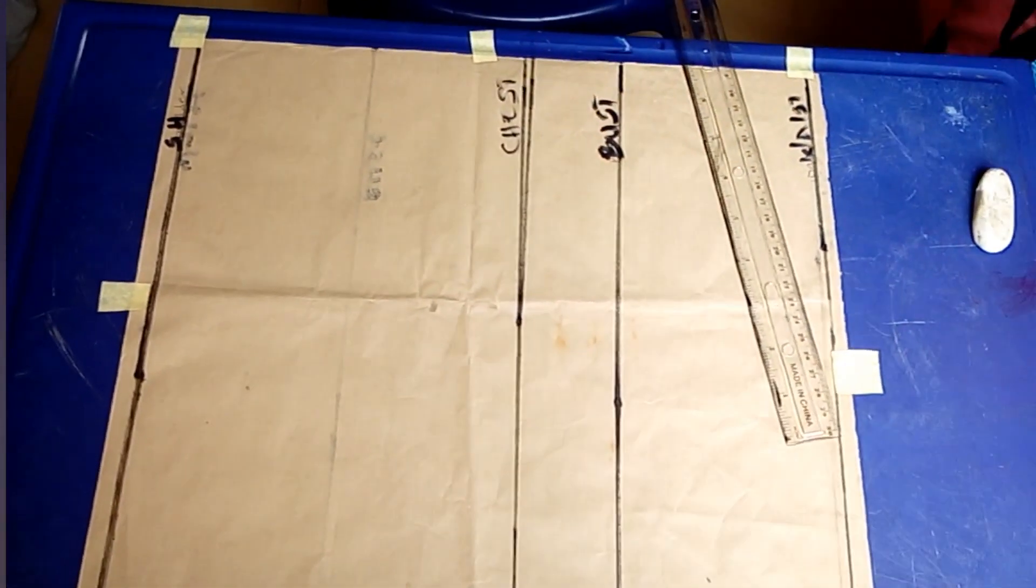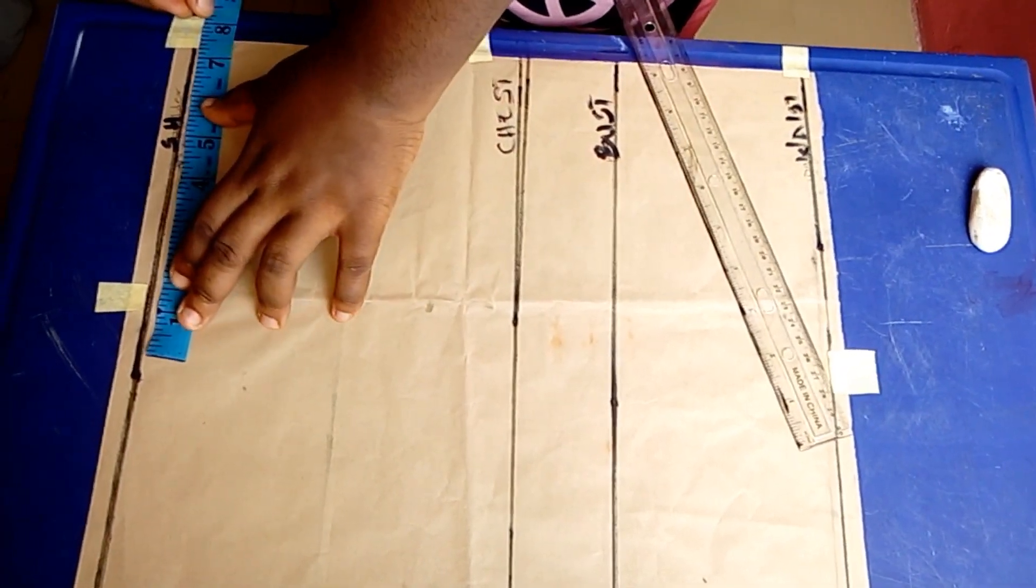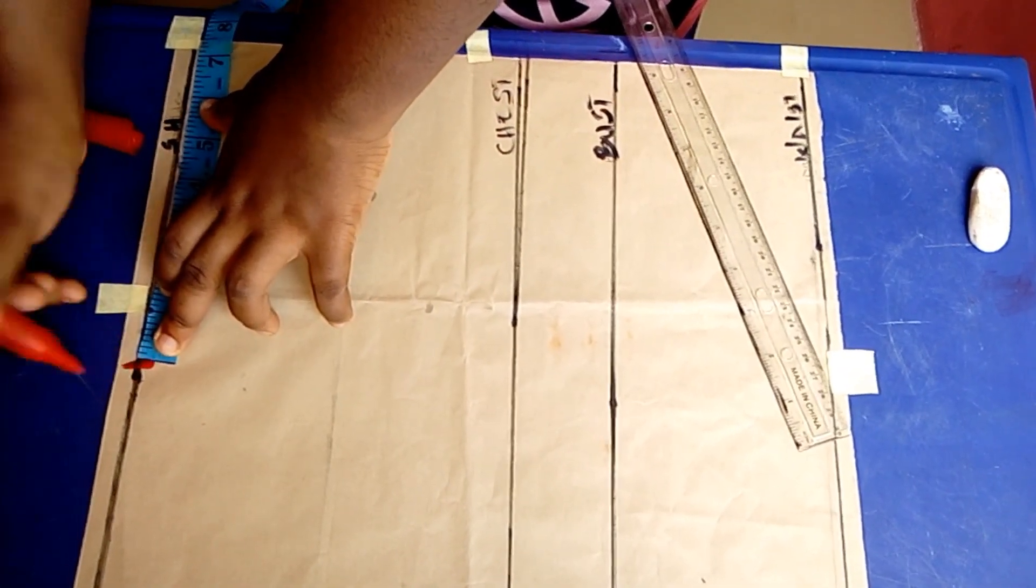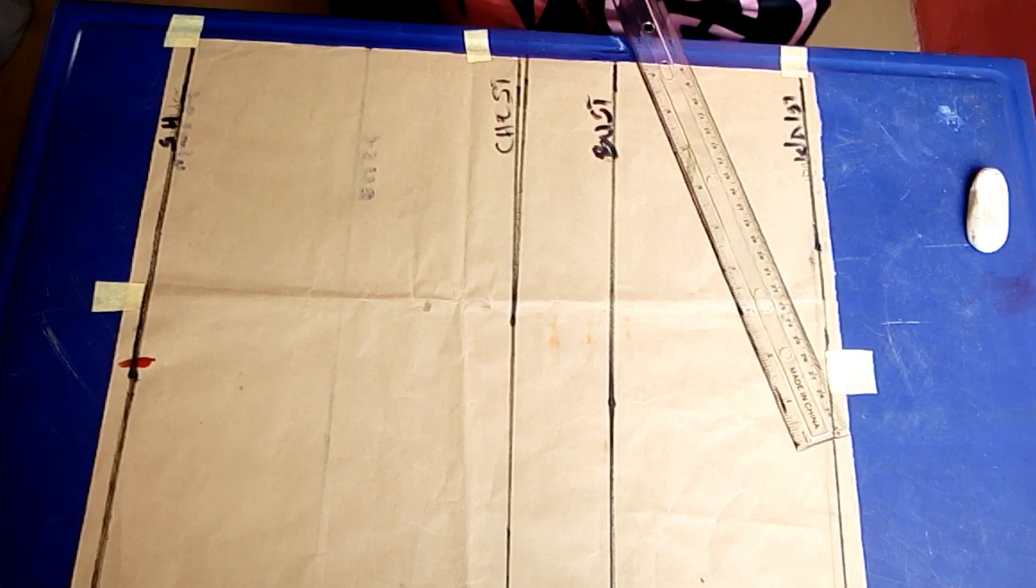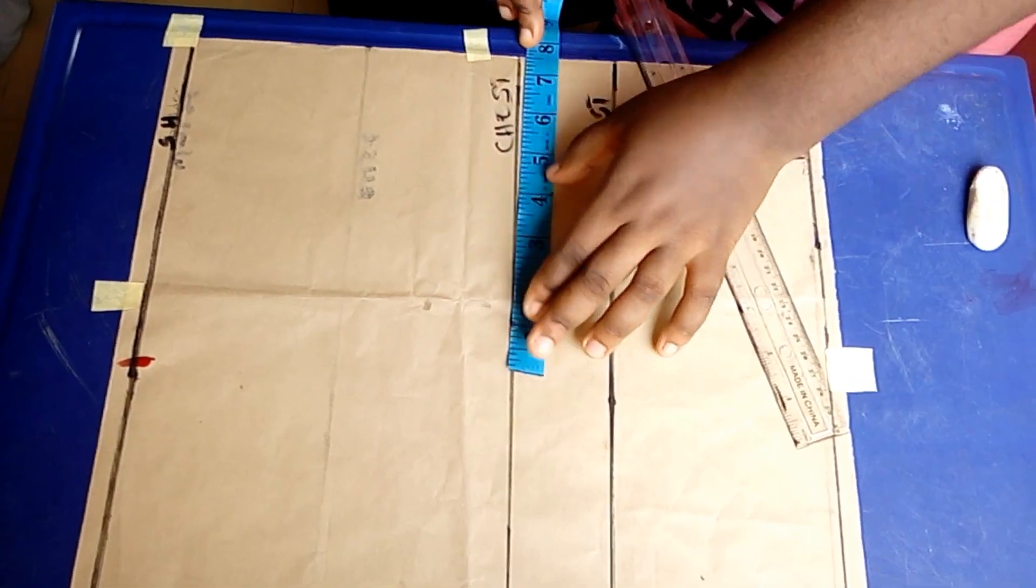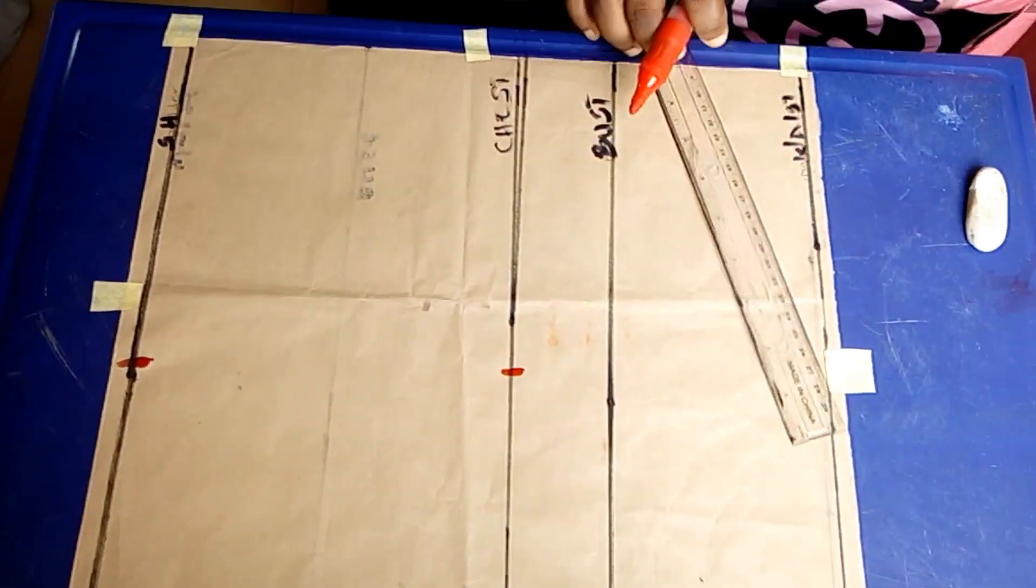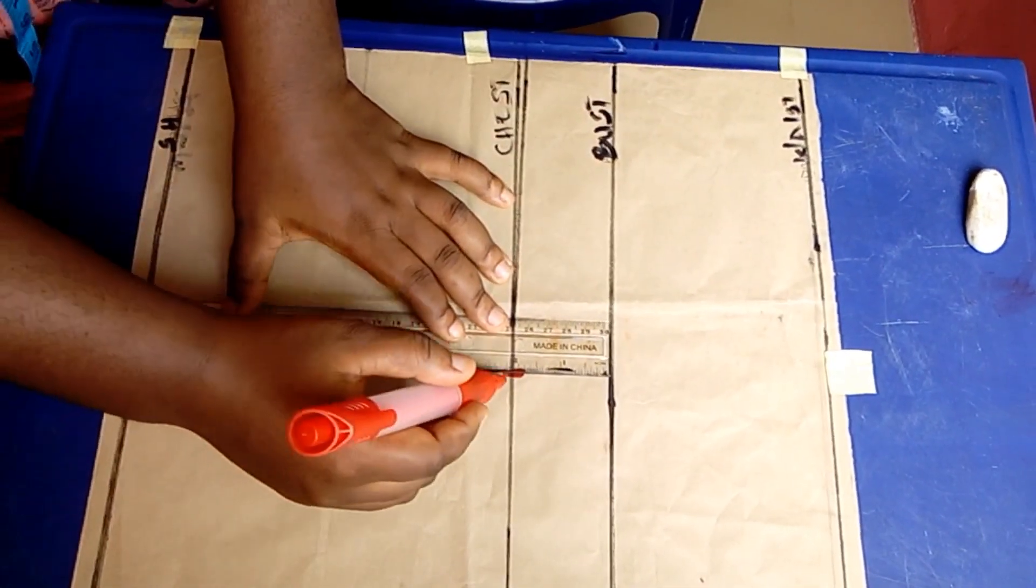I'll label it the chest line. Now I'll go ahead and repeat half of my shoulder measurement, that's 15 divided by 2 is 7.5, and I'll also be putting that on the chest line.